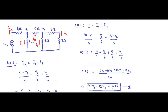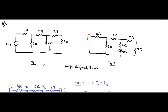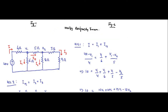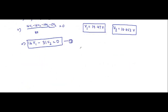We are interested in finding current i2, the current flowing through the 8 ohm resistor. i2 equals V2 divided by 8 ohm, which is 10.052 volts divided by 8 ohm, giving i2 equals 1.2565 ampere.